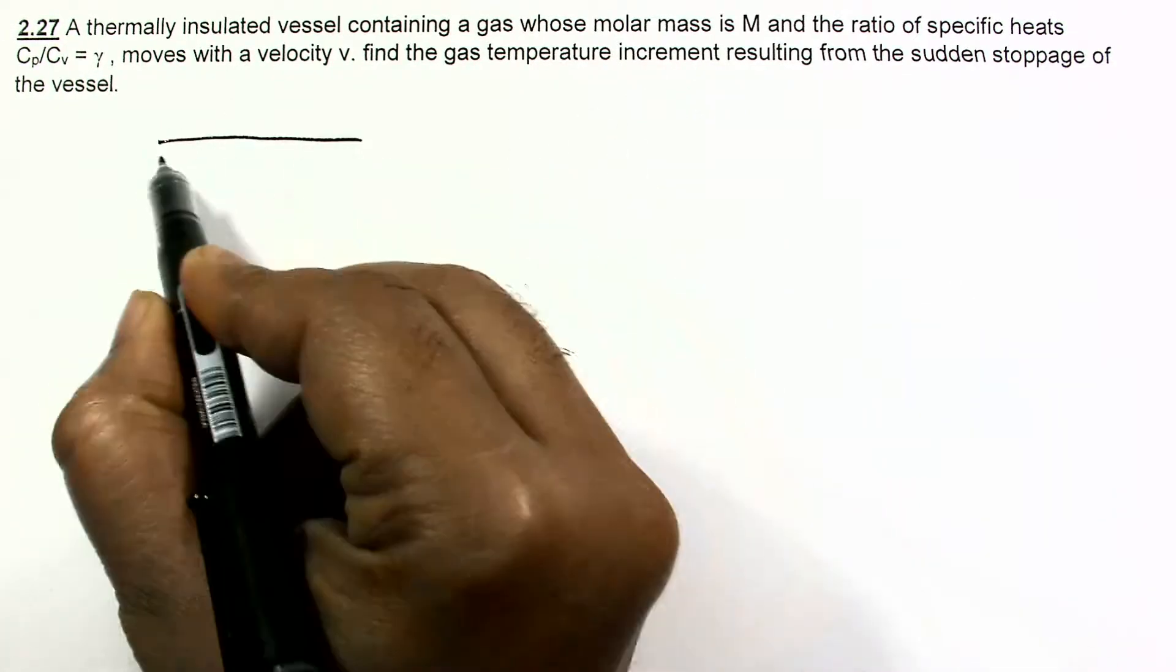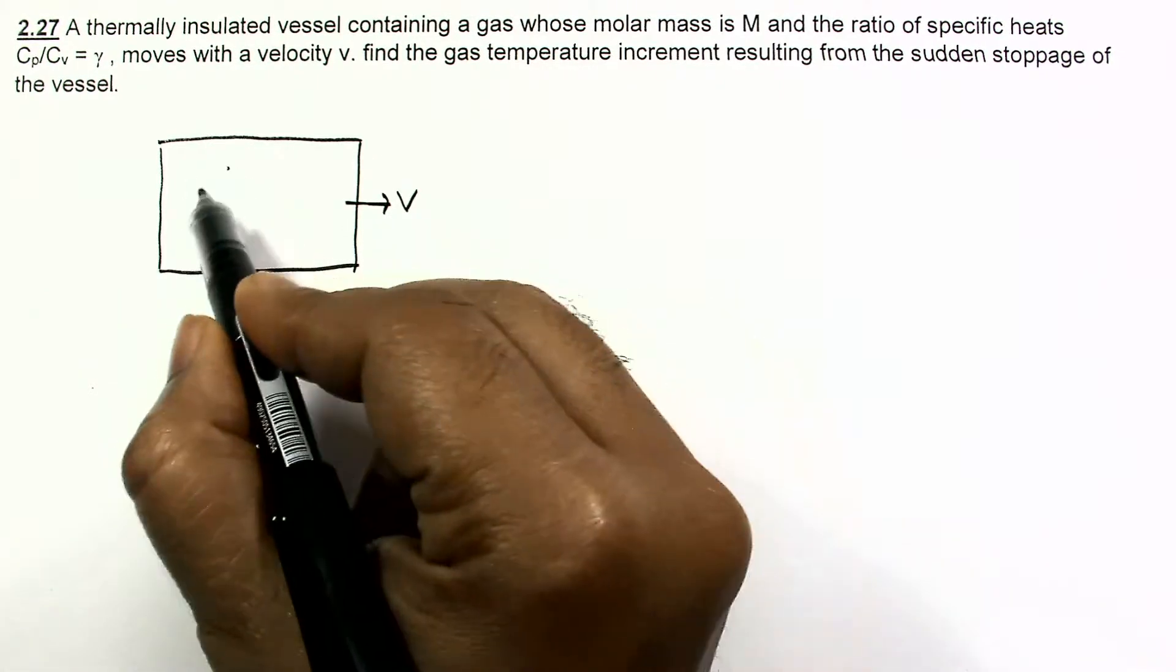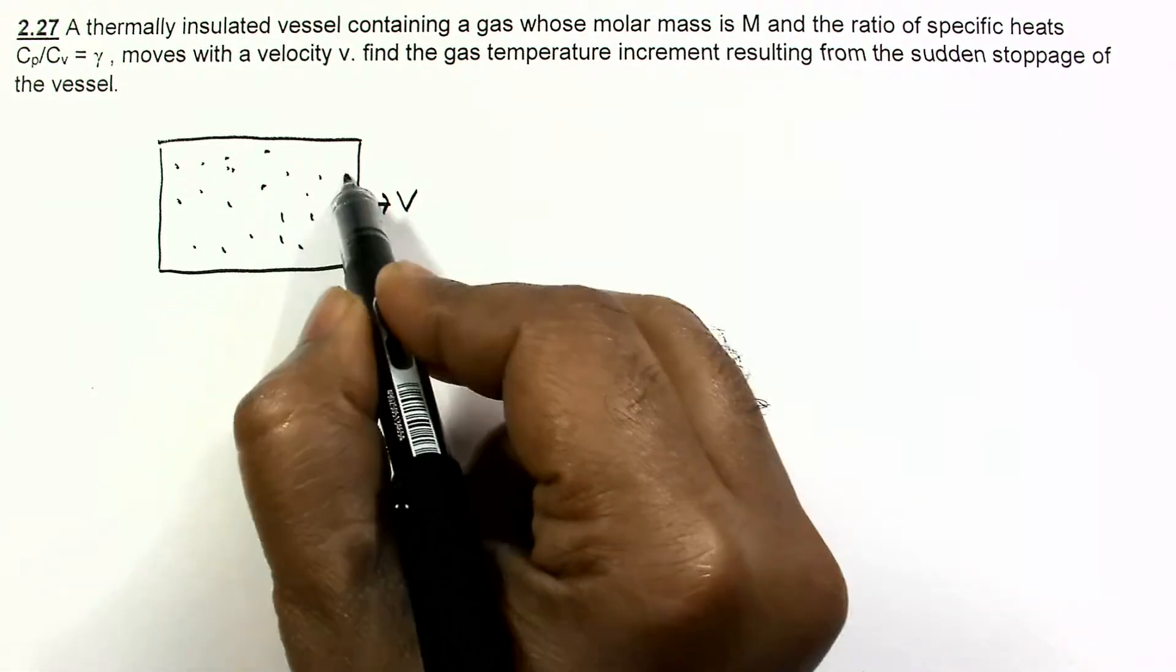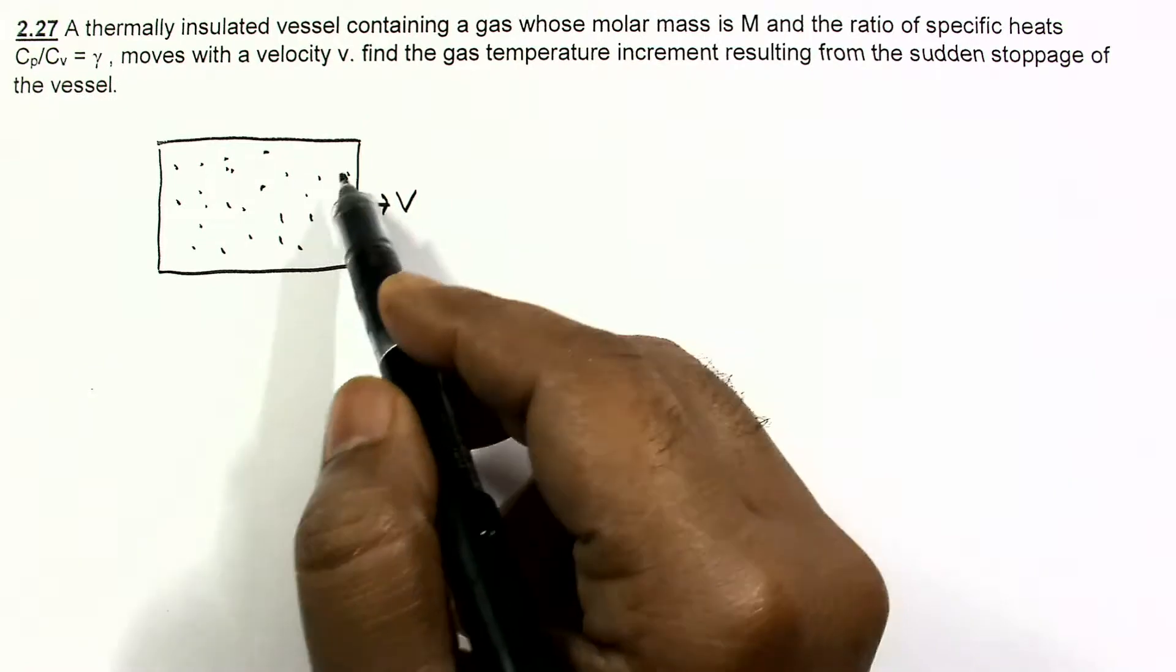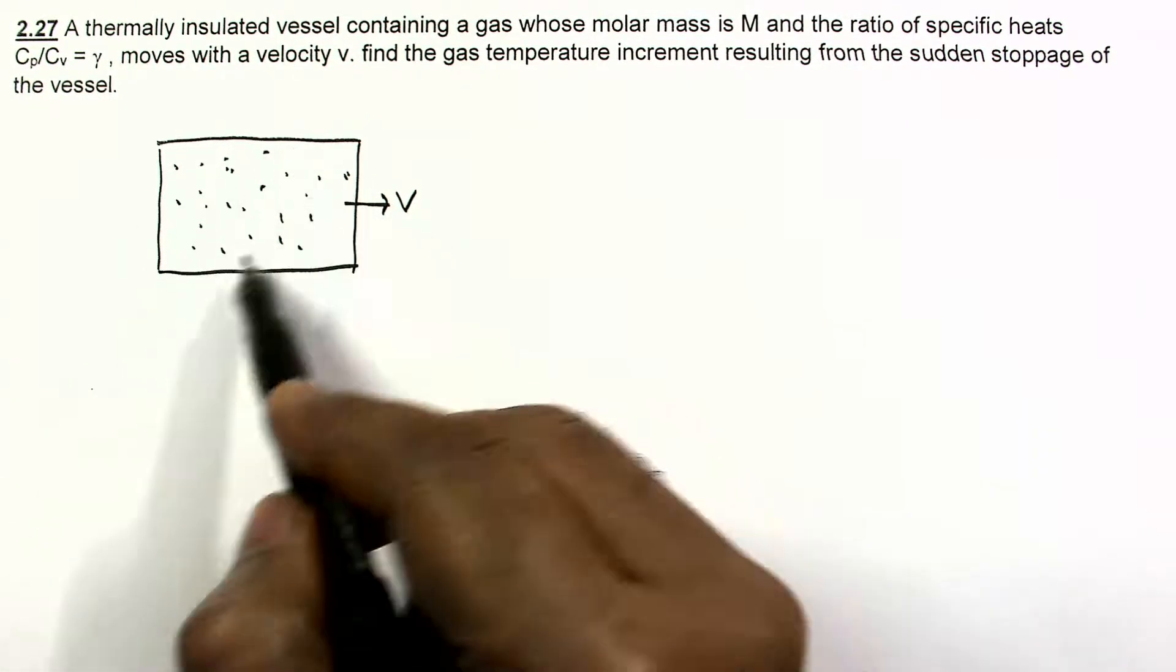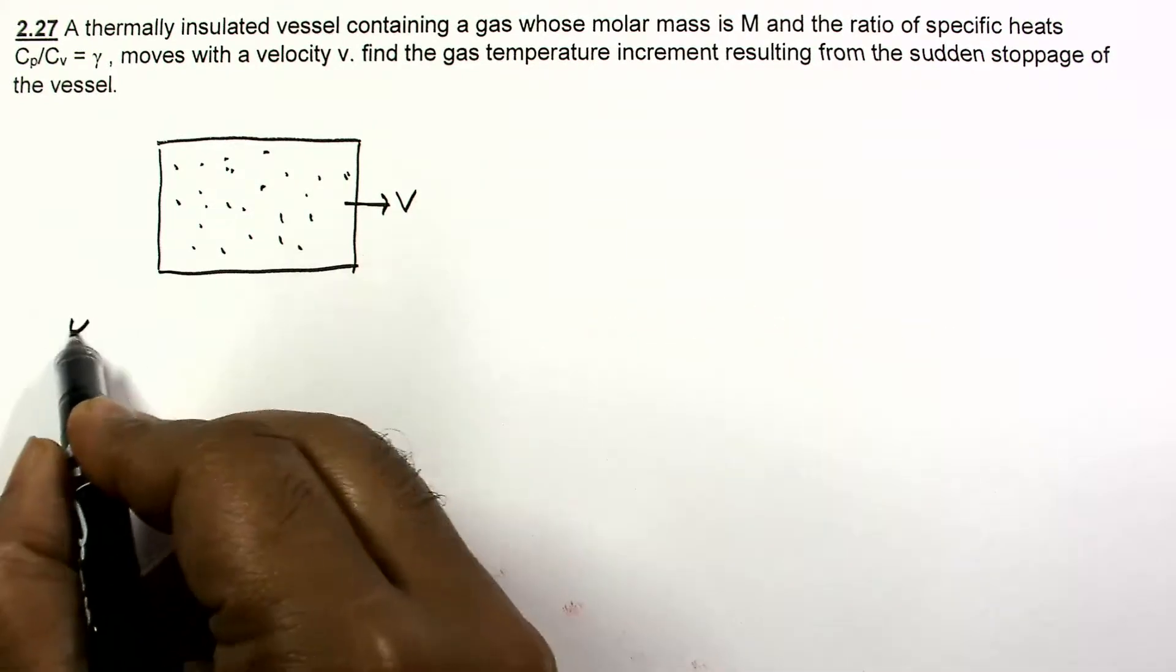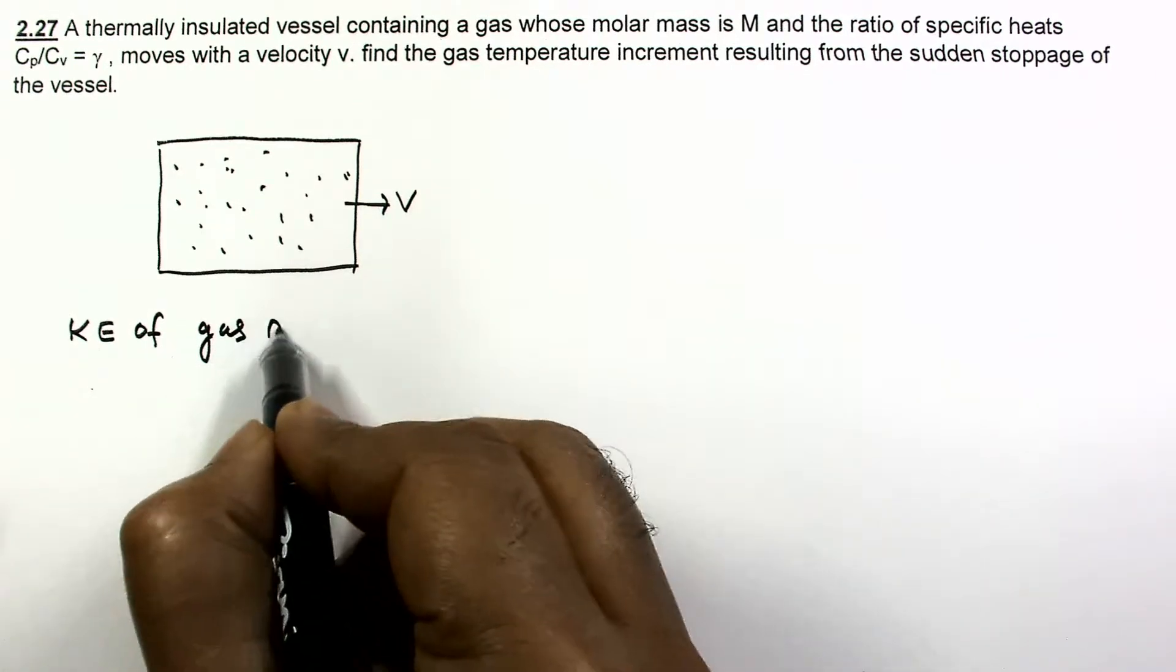If the vessel is initially moving with velocity v, so all these gas molecules are also moving with velocity v and in addition to this velocity v, the gas molecules are in random motion. So we can write the kinetic energy of gas molecules.